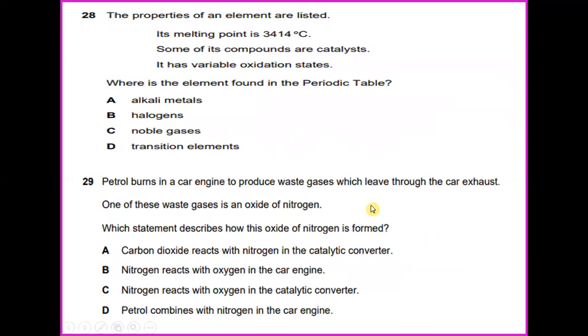Question 28. The properties of an element are listed. Its melting point is 3414 degrees Celsius and some of its compounds are catalysts and it has variable oxidation states. Where is the element found in the periodic table? So if the melting point is 3414, this is under category tungsten. The element is tungsten and tungsten actually falls under transition elements.